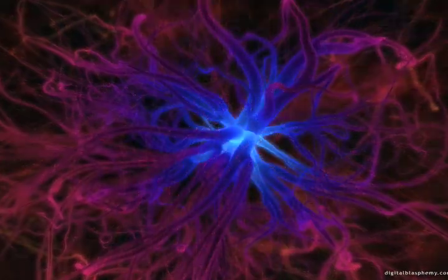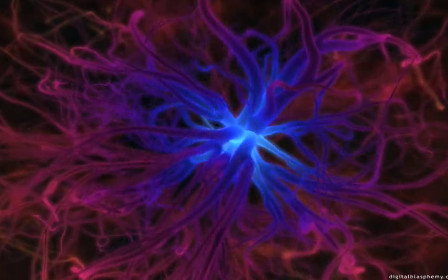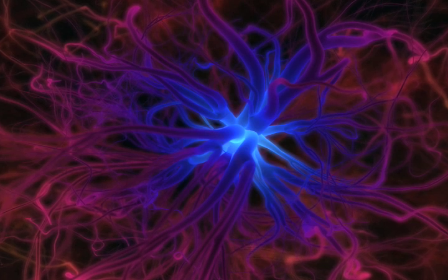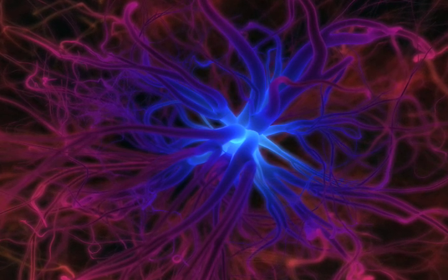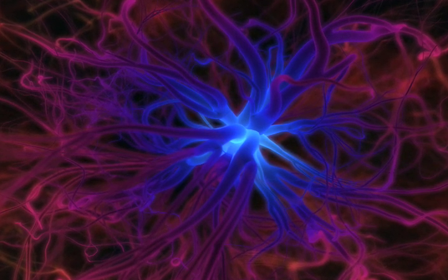Neurons respond to stimuli and communicate the presence of stimuli to the central nervous system, which processes that information and sends responses to other parts of the body for action.